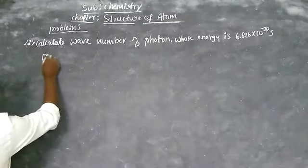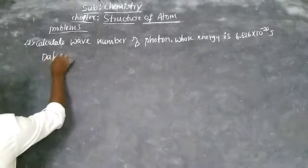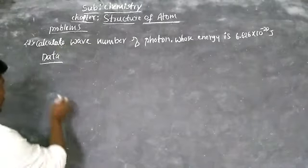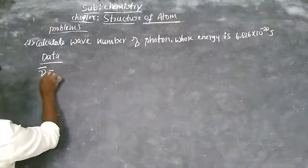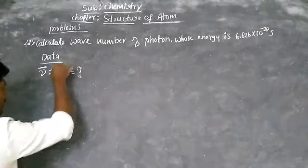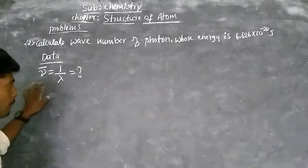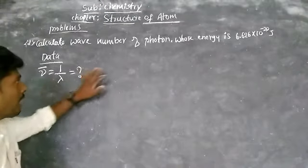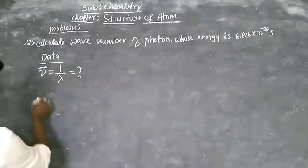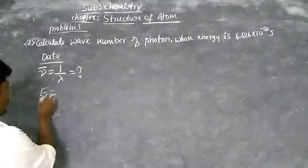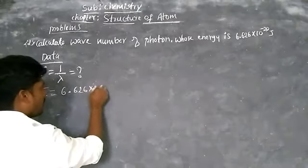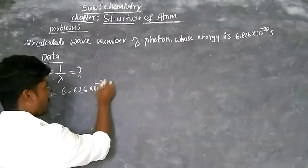Write the data. What they ask to calculate is wave number. Wave number is nothing but nu-bar, that is equal to 1/lambda. The given energy E equals 6.66 × 10⁻²⁰ joules.